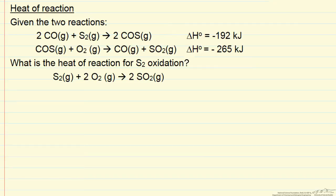In this problem we're given two reactions: carbon monoxide reacting with sulfur S2, and then COS reacting with oxygen. The question is, if we have this information where we know the heat of reaction for these two reactions, can we determine the heat of reaction for oxidation of S2 to make SO2.